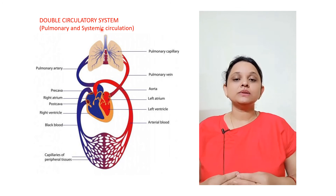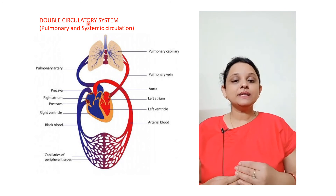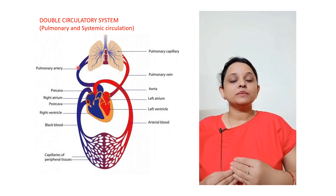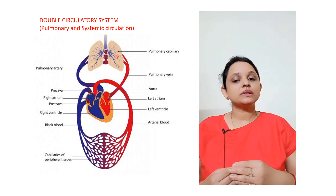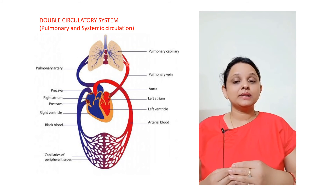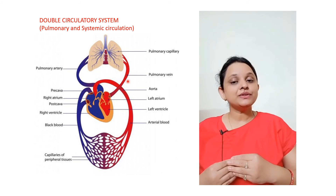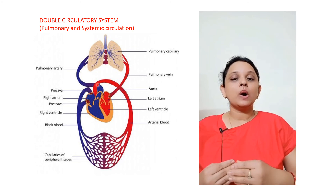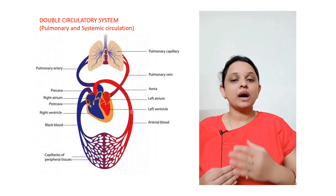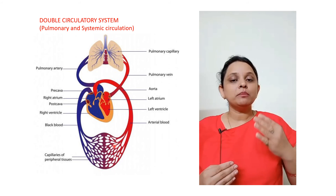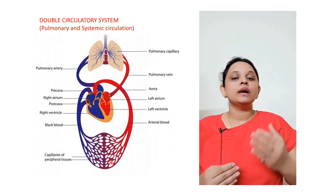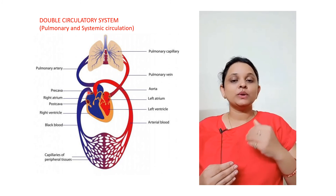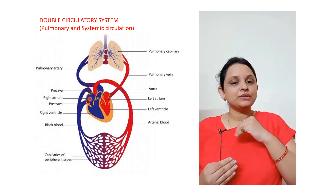Deoxygenated blood is collected via veins and venules back to the heart — this is called systemic circulation. Together, these form a double circulation. The right ventricle pumps deoxygenated blood via the pulmonary artery to the lungs, where it is oxygenated. This oxygenated blood travels via the pulmonary vein to the left atrium, then to the left ventricle, which pumps it via the aorta to arteries and capillaries to the body organs. Deoxygenated blood is then collected via veins, venules, and the vena cava back to the right atrium and right ventricle, beginning the cycle again.